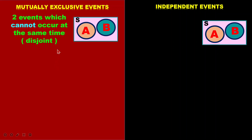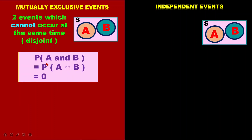In my previous video, I already talked about mutually exclusive events a lot. As we know, mutually exclusive events are two events that cannot occur together — they cannot happen at the same time, and most of the time we call them disjoint. Because they are disjoint, when we want to find the probability of A and B happening together, the intersection is actually zero.